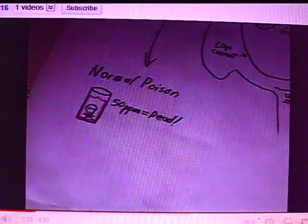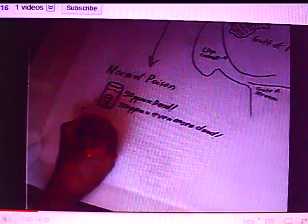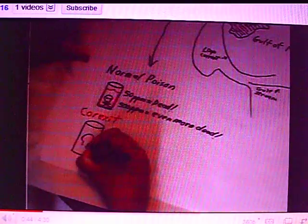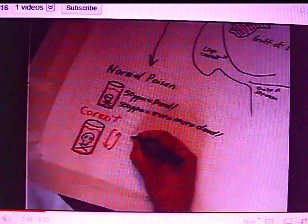With Corexit, it's the opposite. At 110 parts per million, nothing happens. At 6 parts per million, the fish were dead within 96 hours.